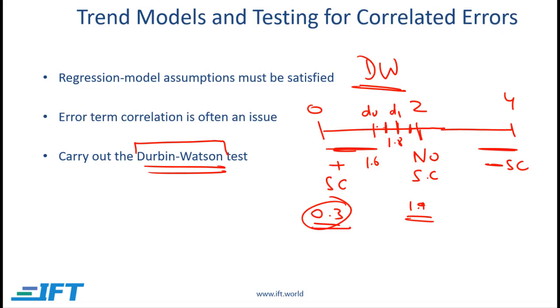But as I said before, if you look at examples 1, 2 and 3, the DW stat is in this region, which means that for all the regressions that we run so far in this section, we do have a serial correlation issue. And how do we deal with serial correlation? This is something we'll be discussing later in this reading.